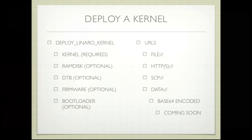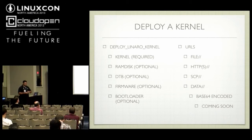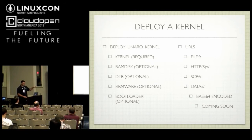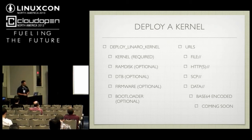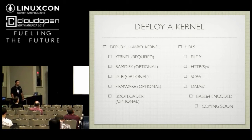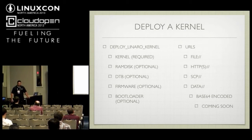We've introduced a new action in LAVA called deploy-linaro-kernel. What it does is say we don't necessarily need a hardware pack or root file system — what we need from you is a kernel at minimum. An optional RAM disk is great too, and we'll take a device tree blob as well. For URLs, you can do file:// for a file on the local LAVA server, HTTP or HTTPS to pull from the web, SCP, or a data scheme which is a base64-encoded binary in the job file itself — so as a kernel developer you can submit the job right from your desk without placing binaries elsewhere.